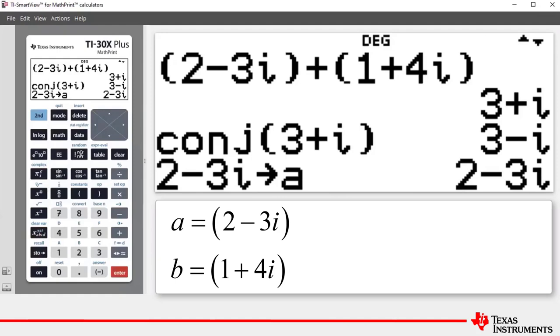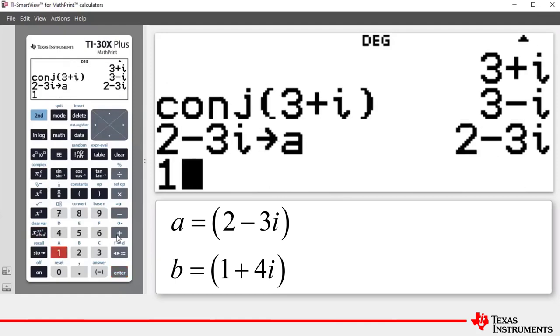We will now do the same thing for one plus four i and store it as b. One plus four using the multitap key for i, then the store key, then we press our variable key one at a time until we get to b and press enter.